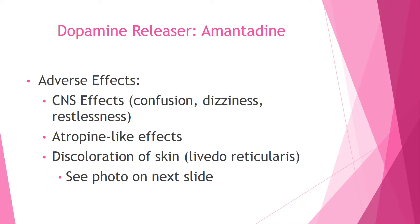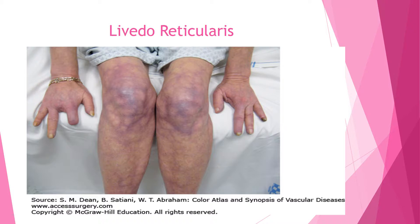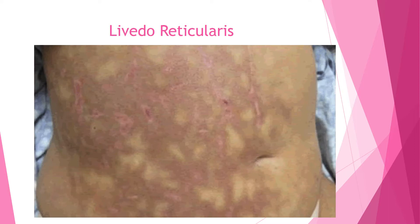Amantadine can cause a purplish skin discoloration — it appears as a mosaic-like pattern with a blue-purple hue on the skin. There may also be pink with darker purple coloring. This discoloration will subside after discontinuing the medication and is not a permanent issue.